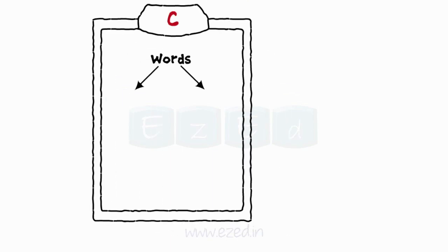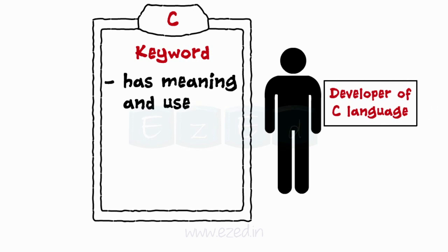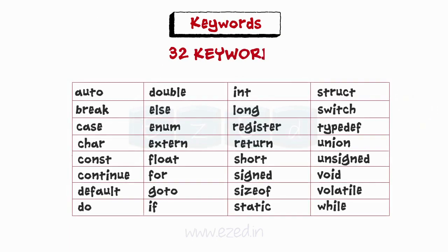Let's learn each of them starting with the keywords first. In C, words are classified as keywords or identifiers. Each keyword has a predefined meaning and use, defined by the developer of the language. Thus it cannot be used for any other purpose. There are 32 such keywords and they are always written in lowercase.